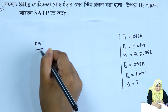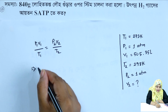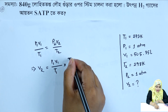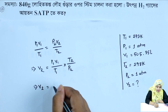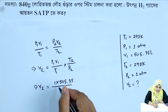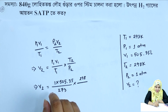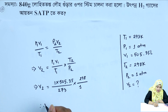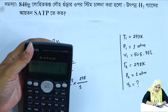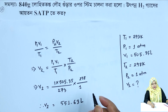P2 is the same, 1 atm. V2 is the same. Using the gas law formula: V2 is equal to 505.35 into 298 divided by 273, which gives 551.63 liters.